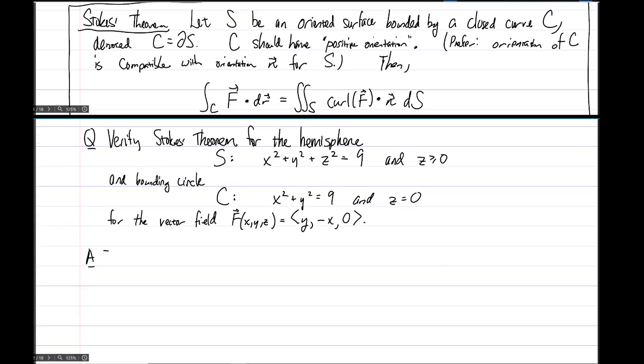So instead of parameterizing S using spherical coordinates, now we could do that, it's just the thing is we only have a hemisphere. Since we have a hemisphere and not the whole sphere, it's probably just a little more convenient for us to parametrize in the following way and just say that S is the graph of a function g of x, y equals root 9 minus x squared minus y squared.